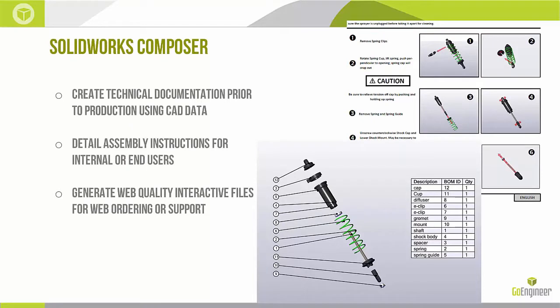Here's an example of SOLIDWORKS Composer. We're going to jump into the software, but I just wanted to give you a heads up — you can create this parts list type BOM. We can create instructions where you can see arrows telling you how to remove things or how things come apart, really illustrating exactly the steps needed. In this case, this is simply the shock.